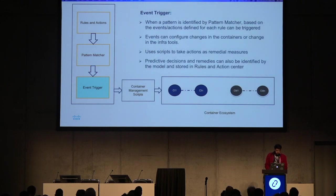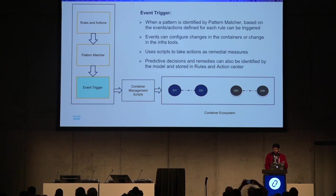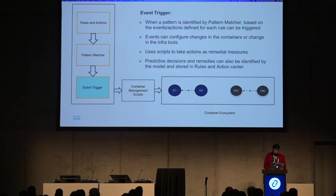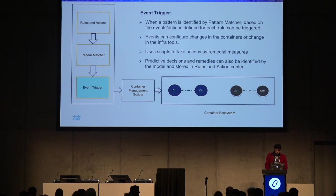The final module is the event trigger module, which holds all the scripts. Whenever a pattern is matched by the pattern matcher and an action is identified from the rule set, events stored in the event trigger module are invoked. This module talks to the container ecosystem through DevOps scripts or simple user-defined scripts used as remedial measures. Based on the predictive decisions made, these remedies are applied to the container ecosystem.